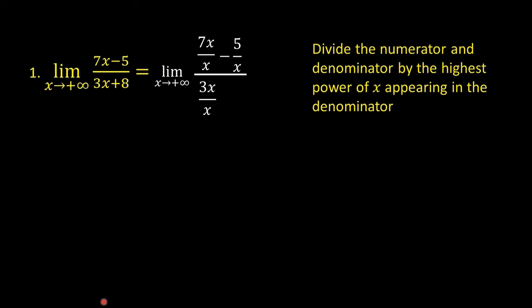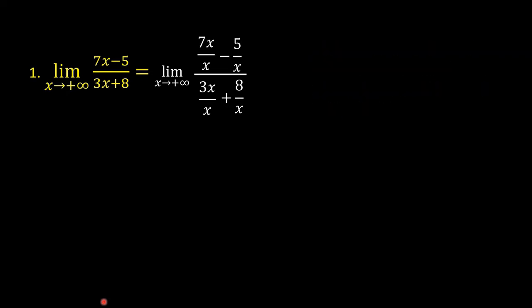We now have the limit of (7x/x minus 5/x) over (3x/x plus 8/x) as x approaches positive infinity. This equals the limit of (7 minus 5/x) over (3 plus 8/x) as x approaches positive infinity. Now find the limit of each term in the numerator and denominator.